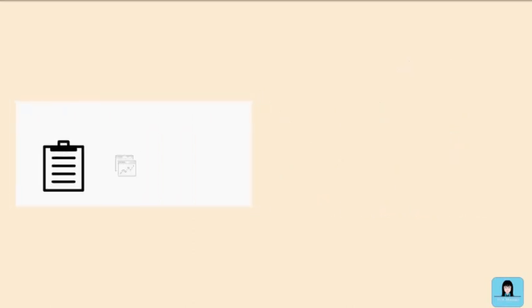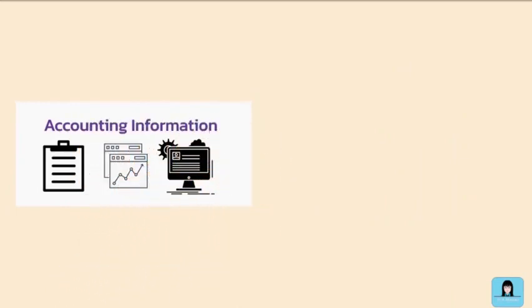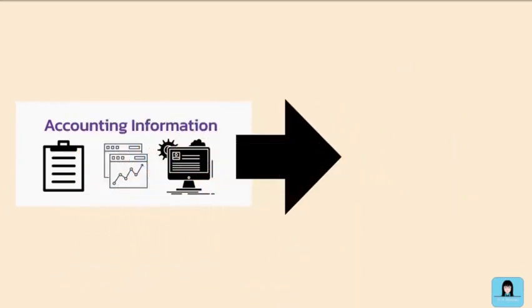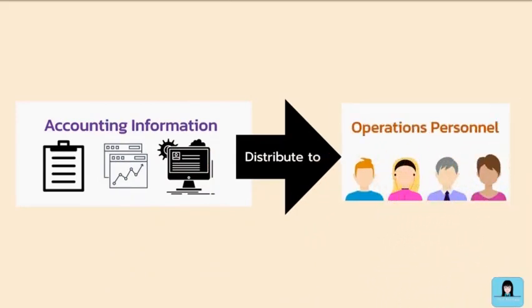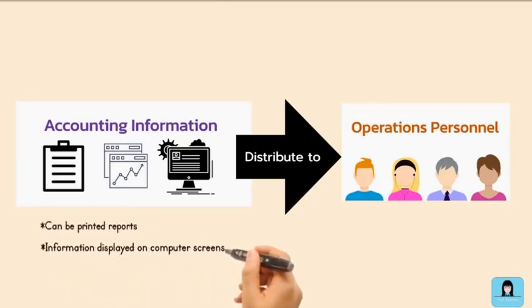The third function of TPS is the distribution of essential accounting information to operations personnel to support their daily operations. The communication of information can be in different forms, such as printed reports or information displayed via a computer screen.